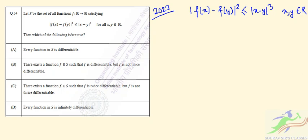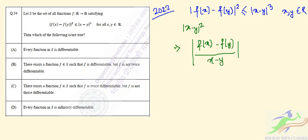If we divide both sides of the inequality by |x - y|², we get |(f(x) - f(y)) / (x - y)|² ≤ |x - y|.